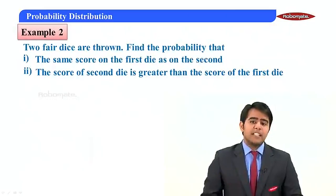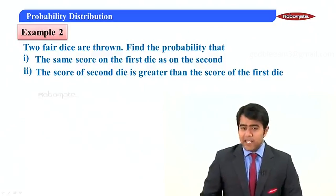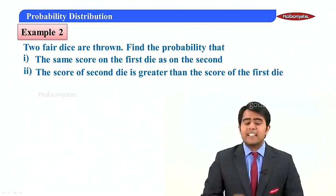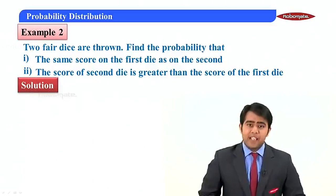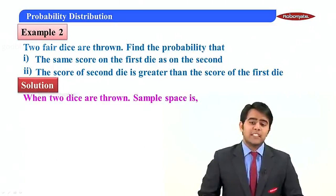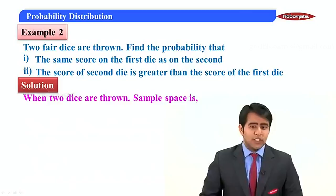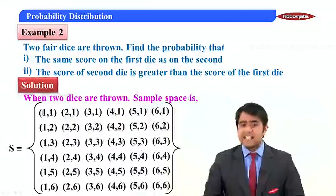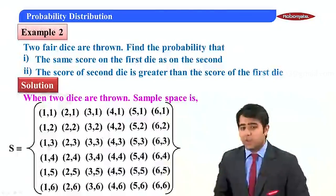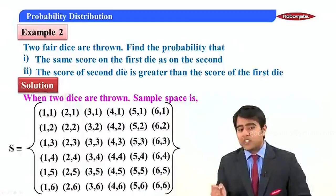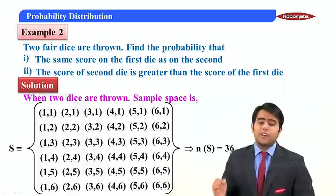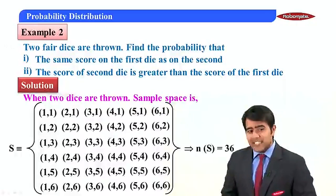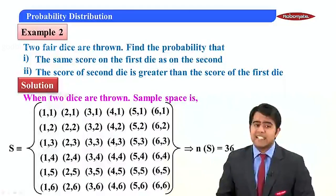Now let us move to the next example. Two fair dice are thrown. Find the probability that (i) the score on the first die is the same as on the second, and (ii) the score on the second die is greater than the score on the first die. When two dice are thrown, the sample space goes from (1,1) up to (6,6), so n(S) = 36.